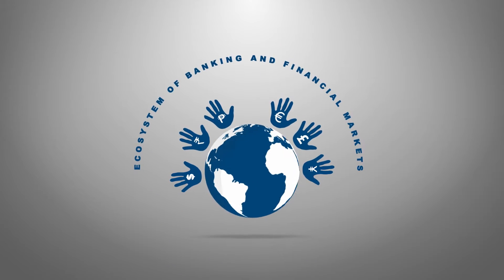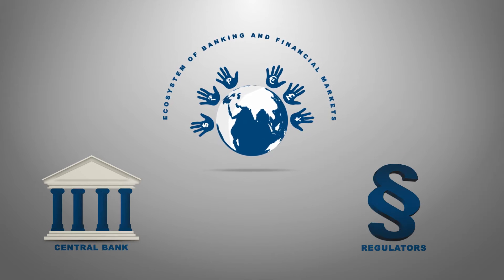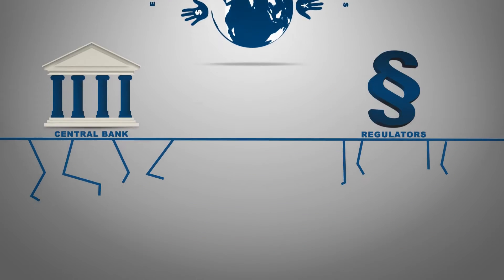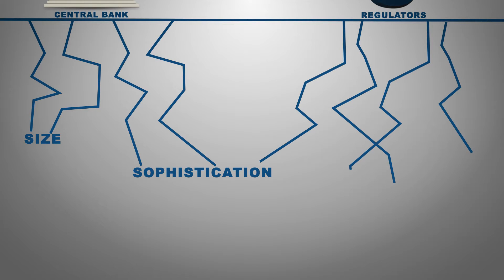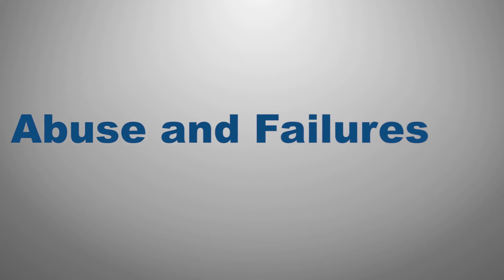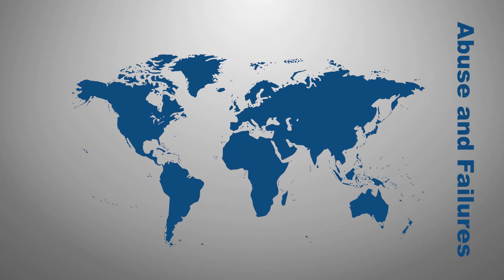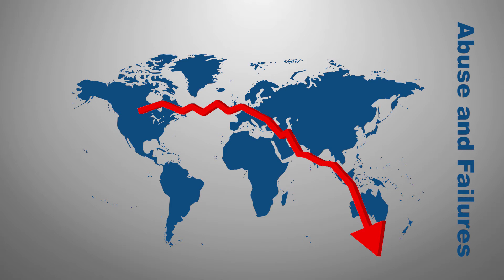That ecosystem of banking and financial markets, including central banks and regulators, has deepened in size, sophistication and complexity over the years. However, they have also been the subject of abuse, failures and economic distress in several countries, with a contagion effect that has concurrently affected several countries around the world.